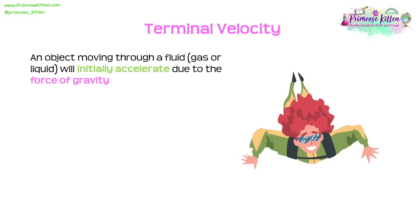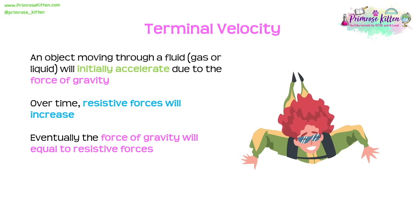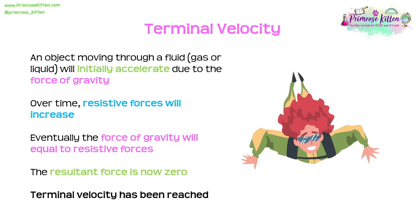If an object moves through a fluid — a gas or a liquid — it will initially accelerate due to gravity. However, as it falls, resistive forces increase until the force of gravity becomes balanced with those resistive forces. With no resultant force, terminal velocity is reached. Terminal velocity is the constant velocity at which the object then falls.